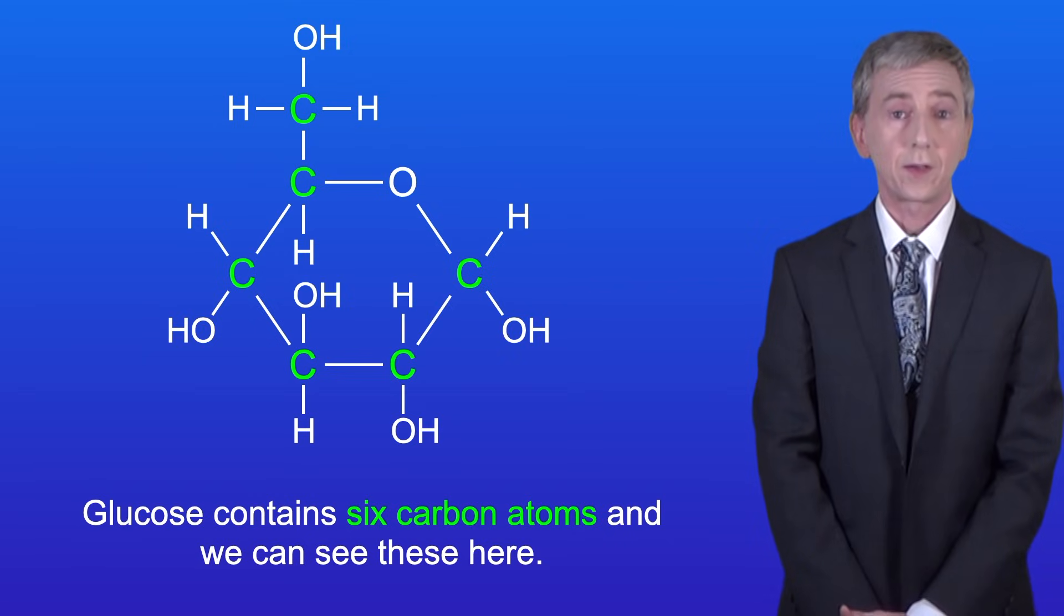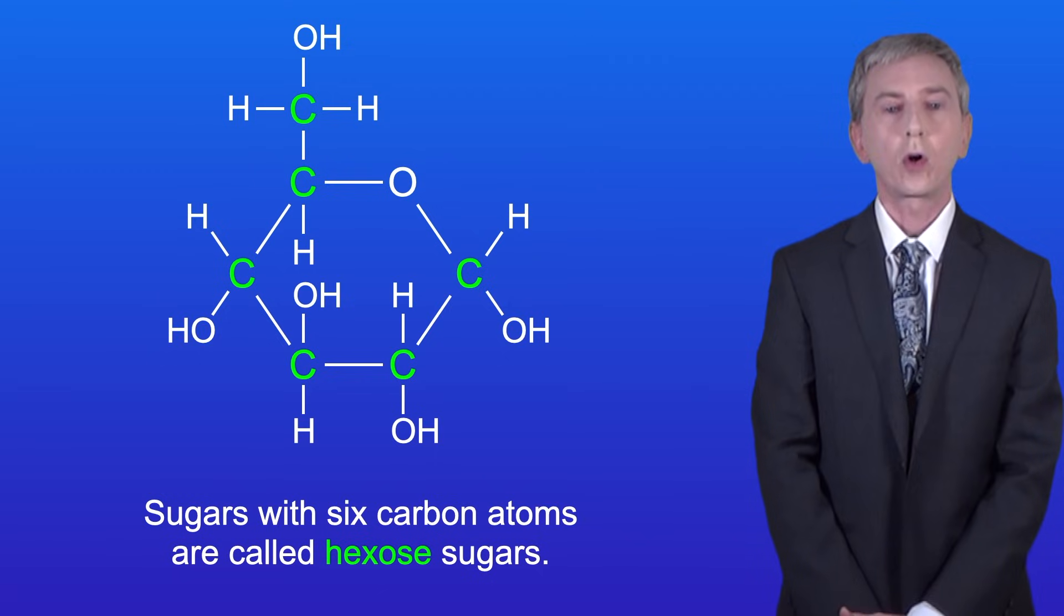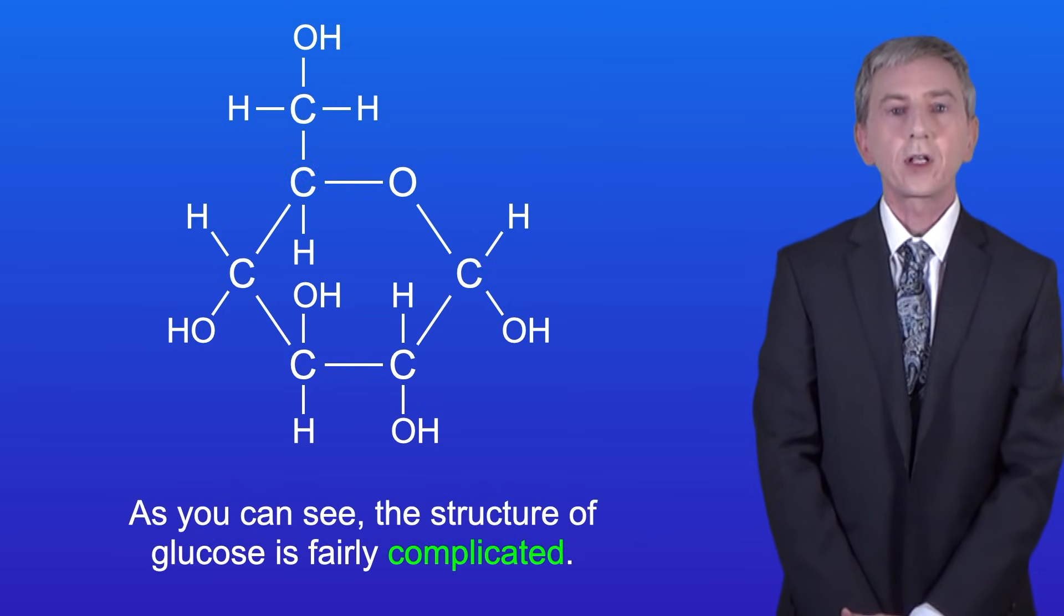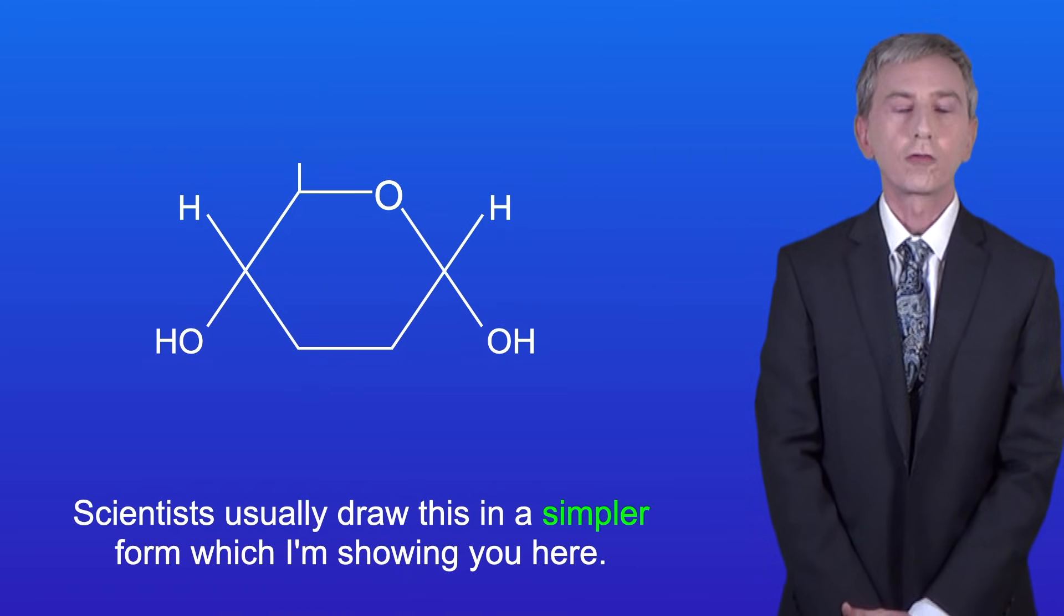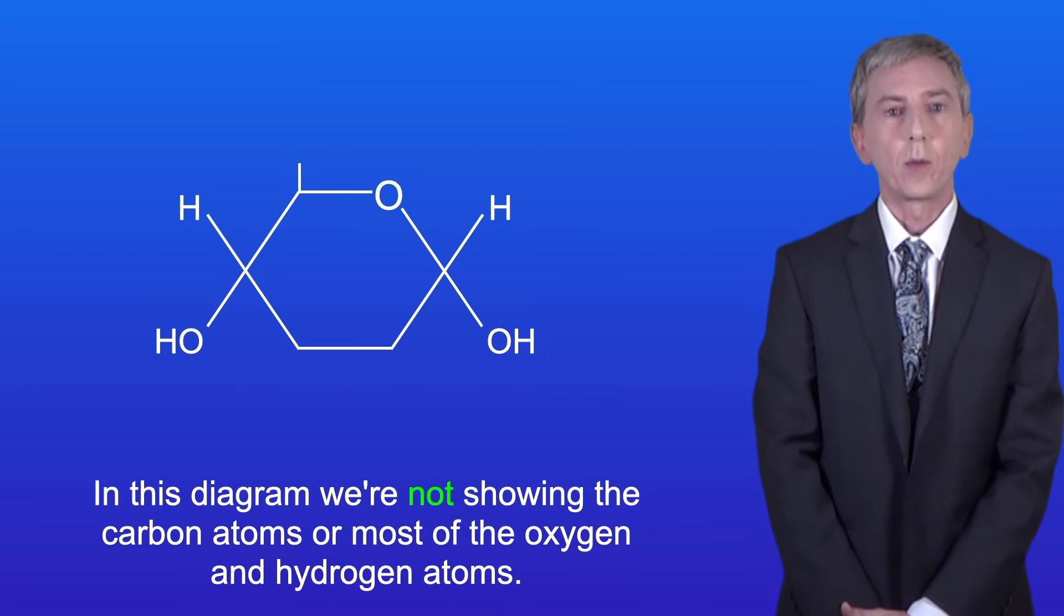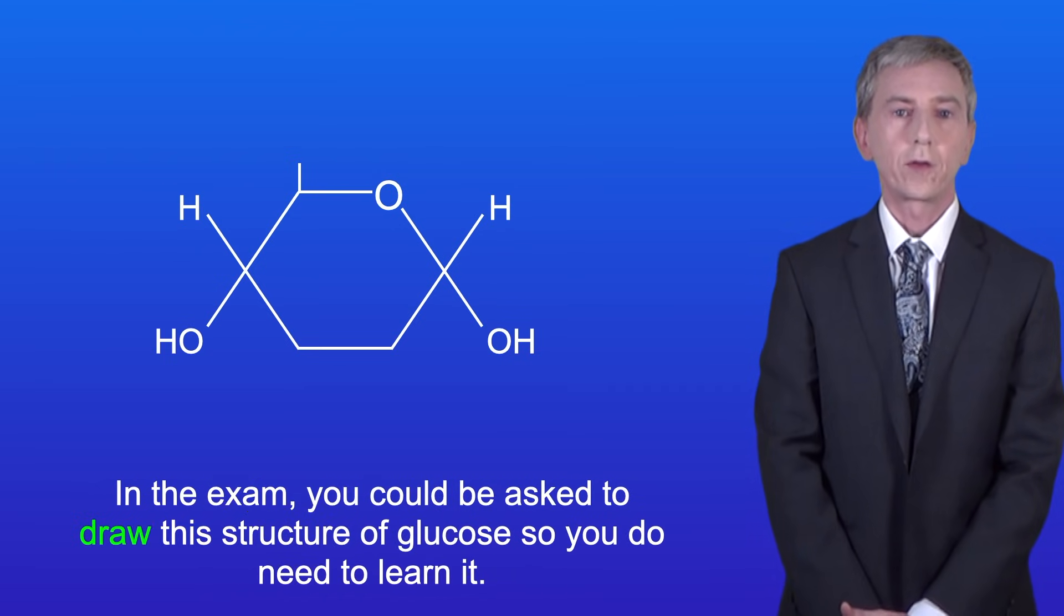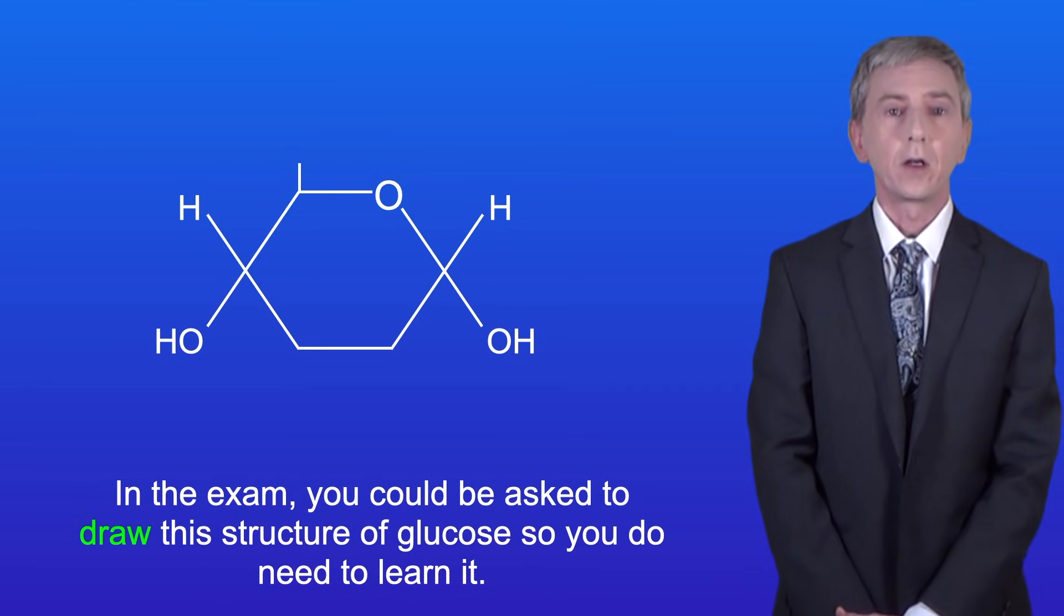Glucose contains six carbon atoms and we can see these here. Now sugars with six carbon atoms are called hexose sugars and you need to learn that word. As you can see the structure of glucose is fairly complicated so scientists usually draw this in a simpler form which I'm showing you here. In this diagram we're not showing the carbon atoms or most of the oxygen and hydrogen atoms. In the exam you could be asked to draw this structure of glucose so you do need to learn it.